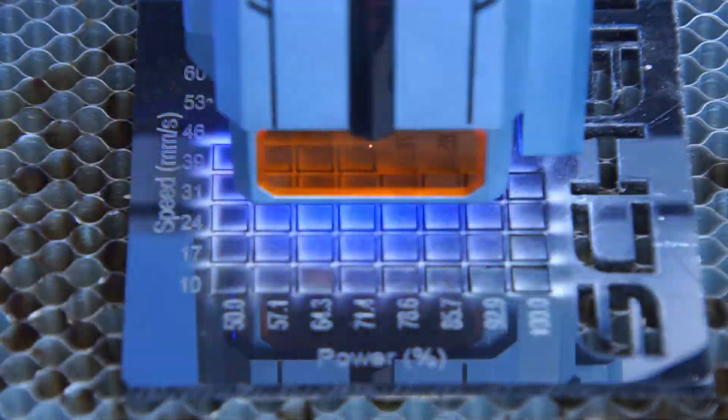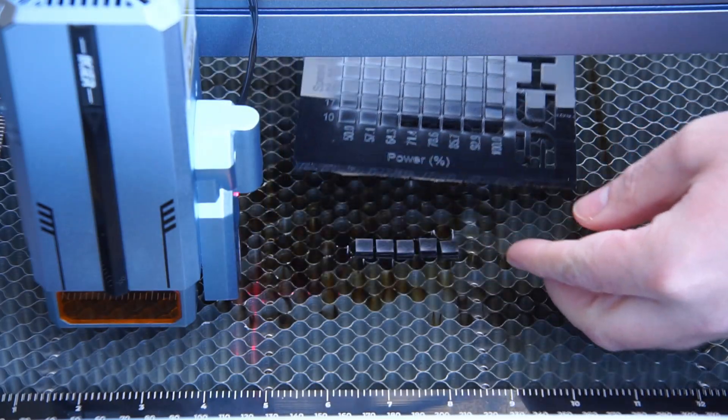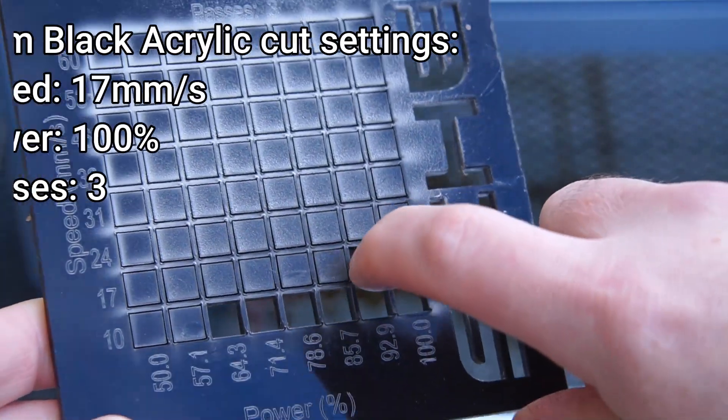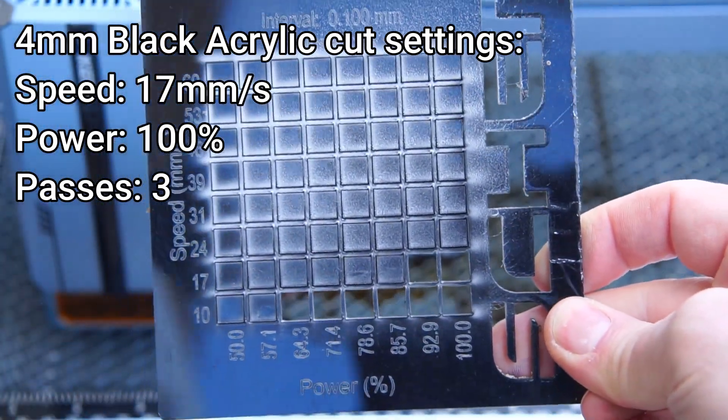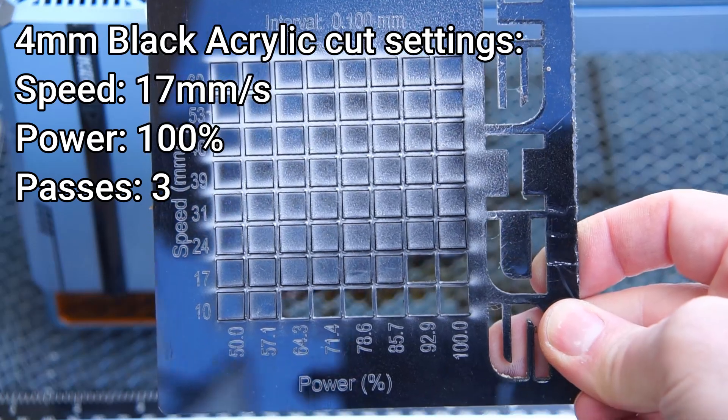Up next is a material cut test on 4 millimeter black acrylic. Based on these results, the optimum cut settings are 17 millimeters a second, 100 percent power, and three passes.